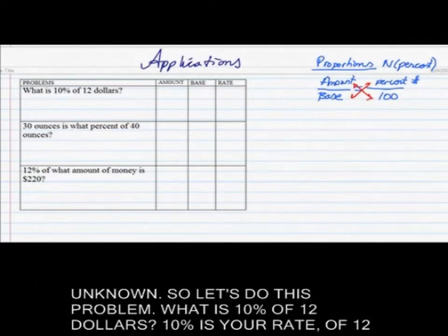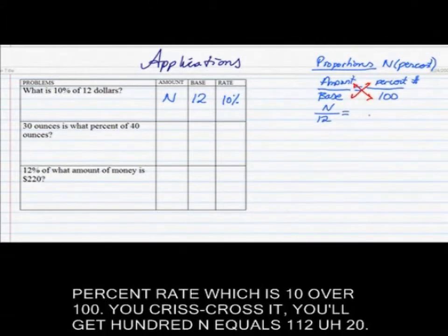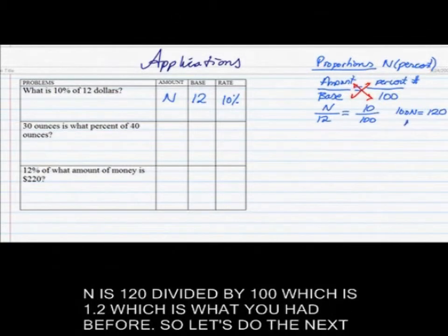What is 10% of $12? 10% is the rate, 12 is the base, n is the amount. Plugging in: n/12 = 10/100. Crisscross: 100n = 120, so n = 120/100 = 1.2, which is the same answer as before.